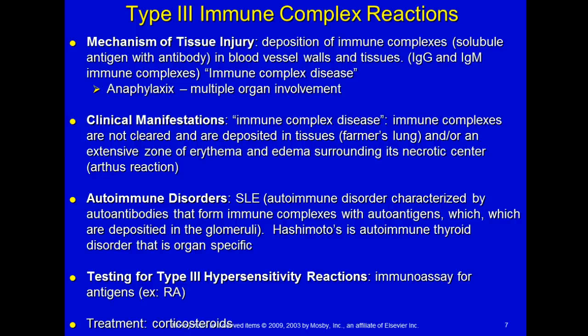Type 3 involves immune complex reactions. The mechanism of tissue injury is the deposition of immune complexes — a soluble antigen with an antibody — in blood vessel walls and tissues. Usually IgG and IgM form these complexes. This immune complexing disease involves multiple organ problems: liver, kidney, and lung issues. The complexes are not cleared and become deposited in tissues. Examples include farmer's lung and the Arthus reaction in the skin — an extensive zone of erythema and edema around a necrotic center.